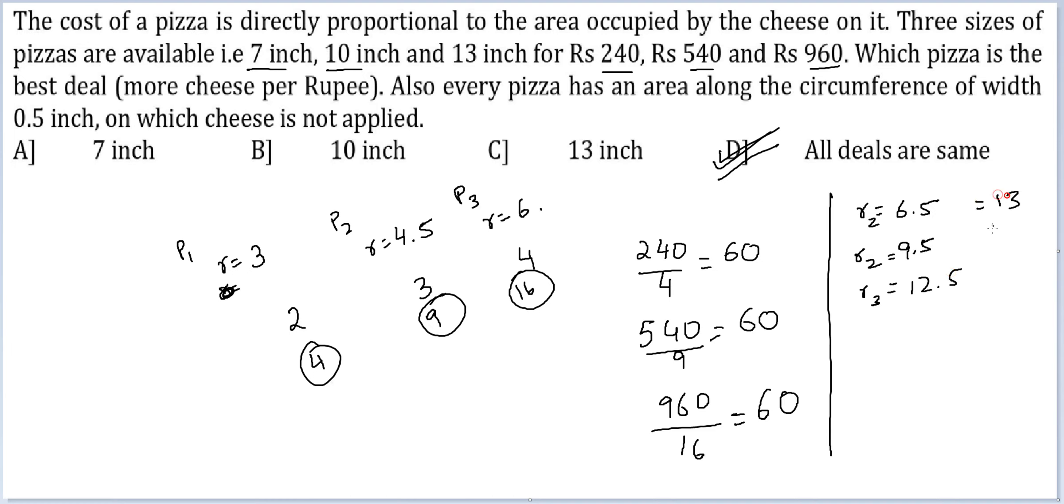So 13, 19 and 25. These would be the ratio of the radii. I am just multiplying every number by 2 to get an integer. Therefore, their area will be in the ratio of 169, 361 and 625. So 240 by 169, and 540 by 361, and 960 by 625.